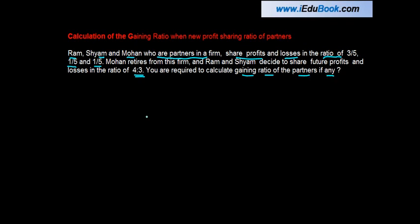So we have three partners: Ram, Sham and Mohan. Their existing profit sharing ratio is 3/5 for Ram, 1/5 for Sham, and 1/5 for Mohan.